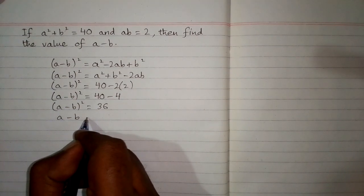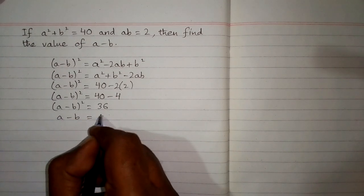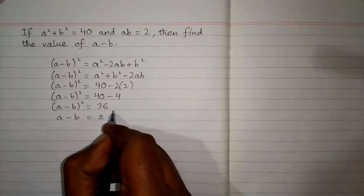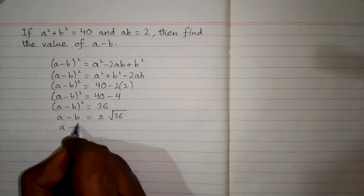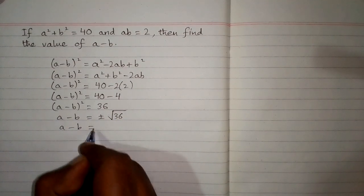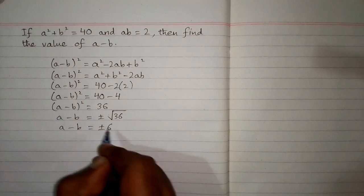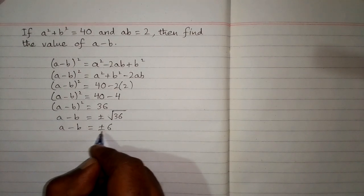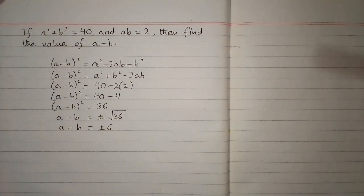Now we take the square root of both sides, so a minus b is equal to plus or minus the square root of 36. The square root of 36 is 6, so the value of a minus b is equal to plus or minus 6, and this is the required answer.